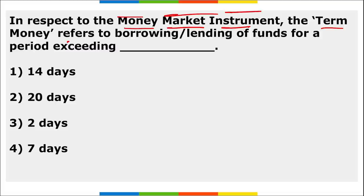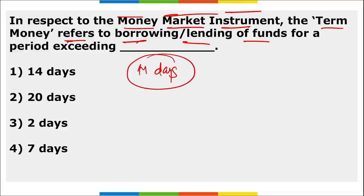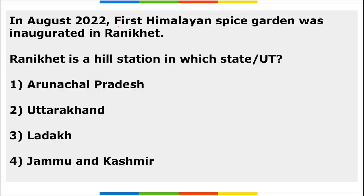In respect to money market instruments, the term 'money' refers to the borrowing and lending of funds for a period exceeding 14 days. The correct option is option one.